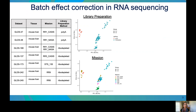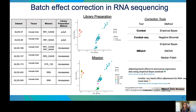Here, we evaluate the effectiveness of five different popular batch effect correction tools: COMBAT, COMBAT-seq, and three tools from the MBATCH suite from MD Anderson — Empirical Bayes, ANOVA, and Median Polish.